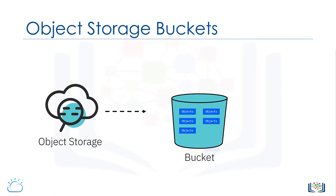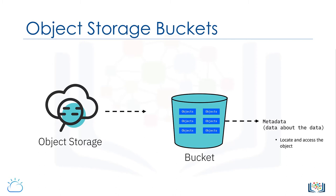Object storage uses buckets, and objects are stored within these buckets in a structurally flat way. A bucket is a bit like a folder in the sense that you can give them meaningful names and of course have different buckets for different object types, but you cannot place a bucket within a bucket. When an object is placed in a bucket, it also has some metadata — data about the data — added to it, such as an object ID. This metadata helps applications to both locate and access the object, as well as provide information on the time that the data was stored or last accessed.